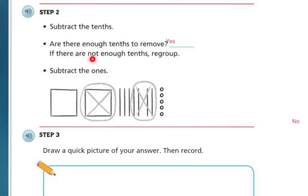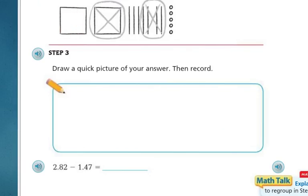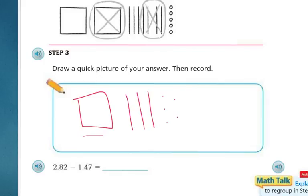If there are not enough tenths, then we're going to regroup. First we're going to subtract the ones — we have our one and we're going to subtract the one. Then we're going to subtract the tenths. Step 3: Draw a quick picture of your answer and then record. As you can see in the picture, I'm left with 1, then 3 tenths, and 5 hundredths. So the answer is 1 whole, 3 tenths, and 5 hundredths.